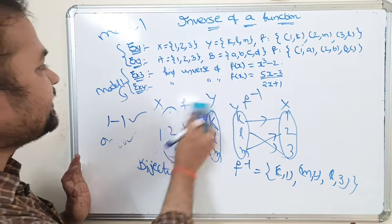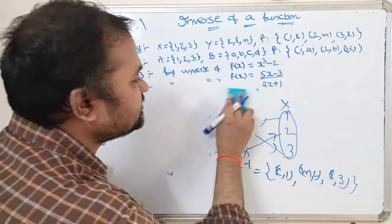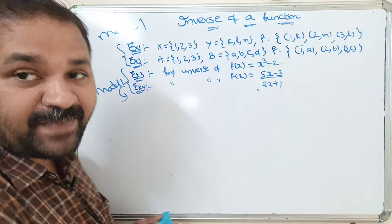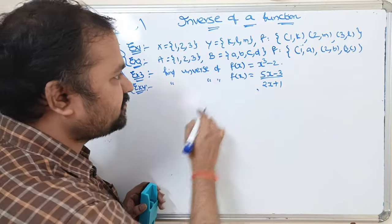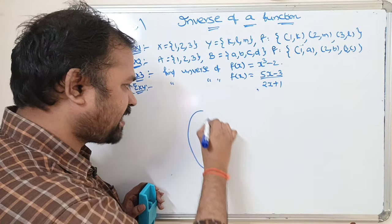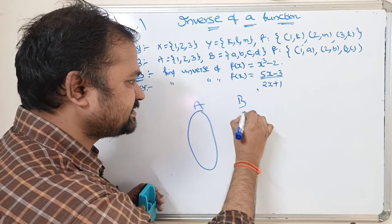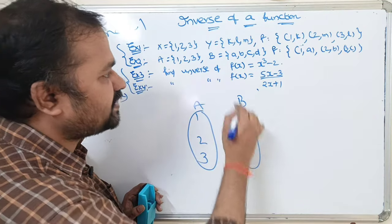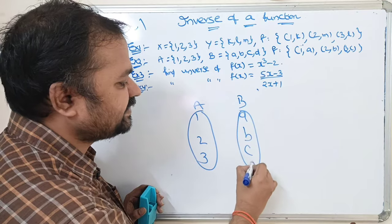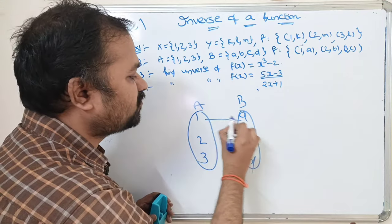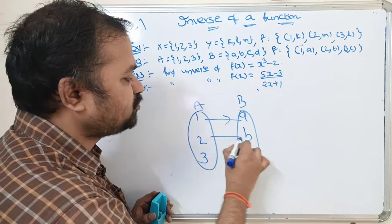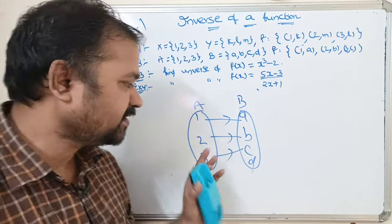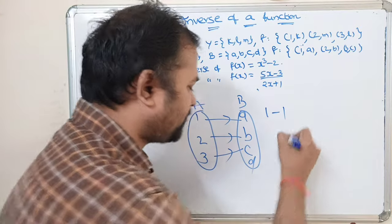Now let us see the second example, also based on model 1. The function maps from A to B. Elements of A are 1, 2, 3 and elements of B are a, b, c, d. The mappings are: 1 to a, 2 to b, 3 to c. There is no mapping for d.